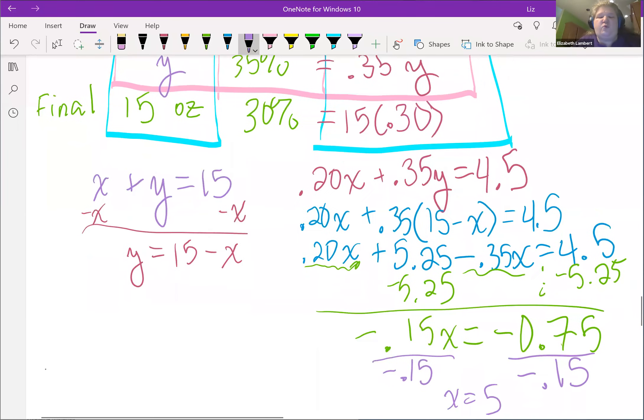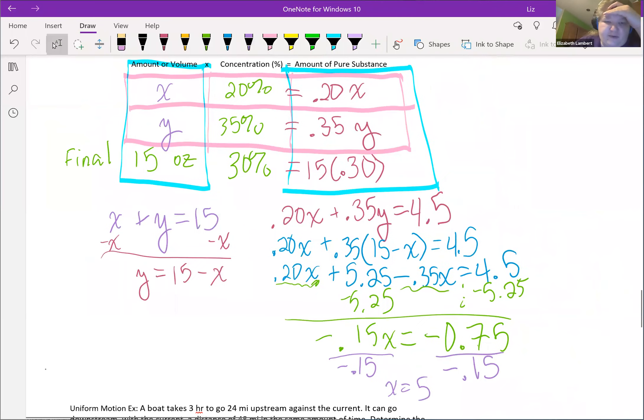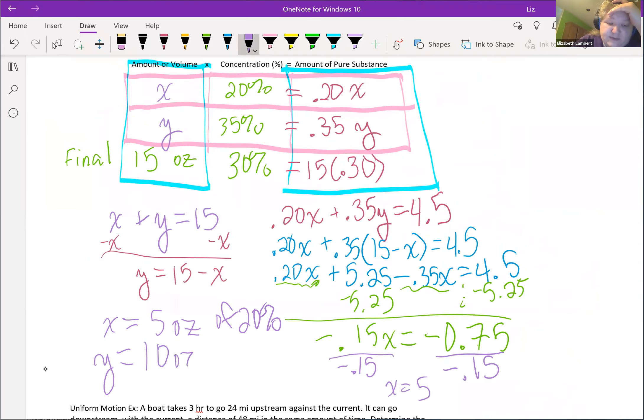Five what? X is five. I go back here, that's the amount or volume column: ounces. Five ounces of 20%. So y is whatever we need to get to 15, which is 10 ounces of 35%.